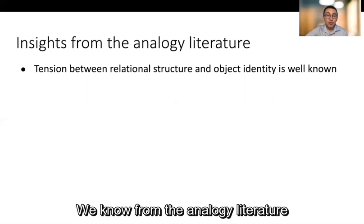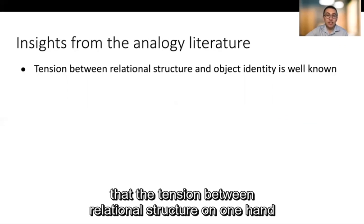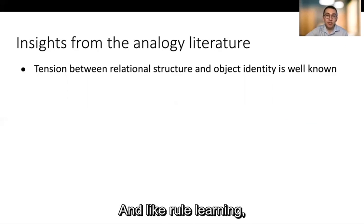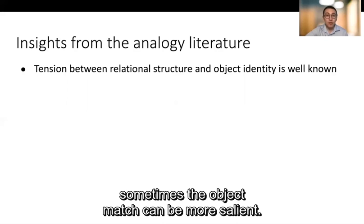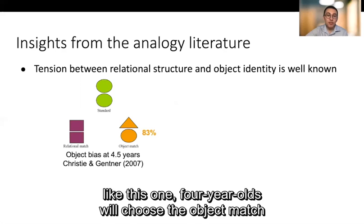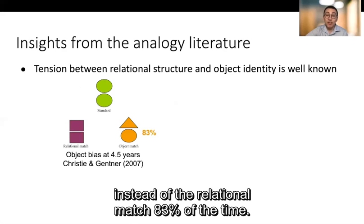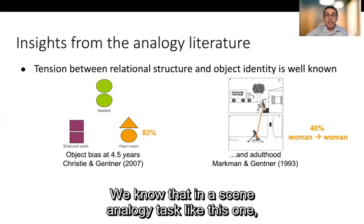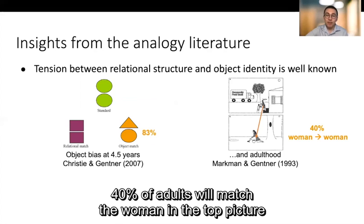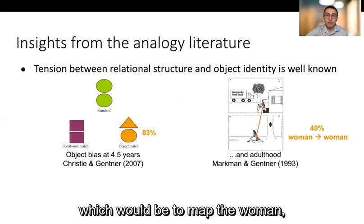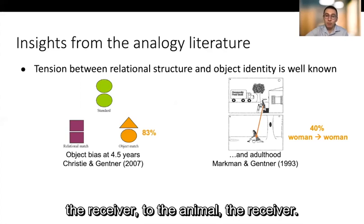And this isn't a new insight. We know from the analogy literature that the tension between relational structure on one hand and object identity on the other is strong and like rule learning analogy involves the abstraction of structure but in that abstraction sometimes the object match can be more salient. For example in a relational match to sample tasks like this one four-year-olds will choose the object match instead of the relational match 83% of the time and adults are certainly not infallible either. We know that in a scene analogy task like this one 40% of adults will match the woman in the top picture to the woman in the bottom picture instead of using the relational match which would be to map the woman the receiver to the animal the receiver.